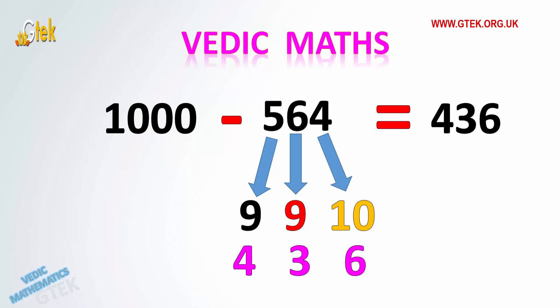So 1000 minus 564 is subtracted with the shortcut method as the last digit 4 should be subtracted from 10 and other digits should be subtracted from 9. So with this logic we proceed: 10 minus 4 is 6, 9 minus 6 is 3, 9 minus 5 is 4. So the answer is 436.